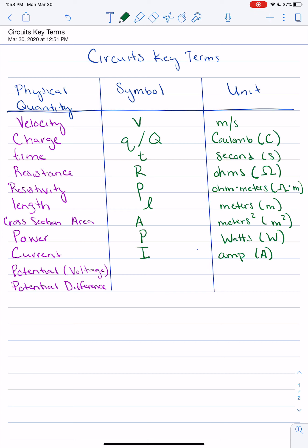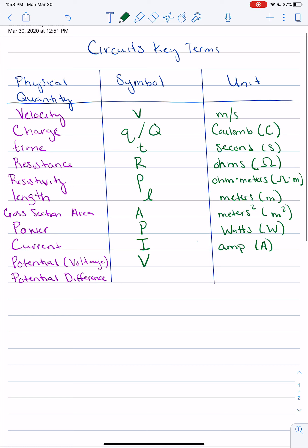Now we have potential, which is also called voltage. Potential is a measure of the electric potential energy of a particular charge. And we use the symbol capital V. Notice that is different from lowercase v in velocity. And the unit for potential or voltage is the volt, which we abbreviate V as well. So in this case, the symbol and the unit are the same, but that is not the case for most of these.